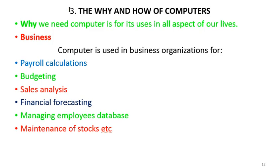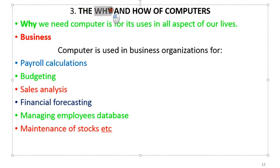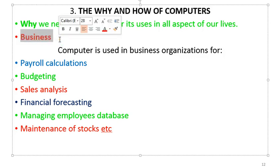We now move to item number three on our course contents: why do we need a computer and how does the computer operate? We need computers because the computer is inevitable — it plays significant roles in all aspects of our lives. We are going to see the applications of computer in different areas. Let's start with business. We are in the business administration department, so let's start here.